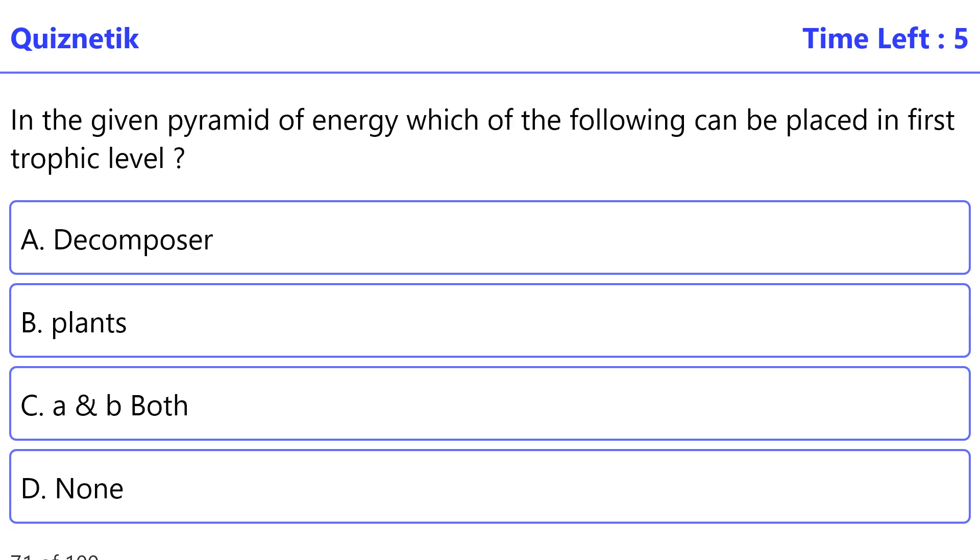In the given pyramid of energy, which of the following can be placed in first trophic level? The correct option is C, A and B both.